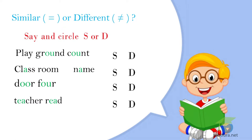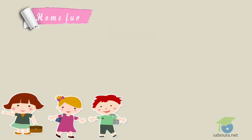Home fun: What is it? It's a circle. It's a square. Is it a rectangle? No, it's a triangle. The answer: it's a circle, it's a square, is it a rectangle? No, it's a triangle.